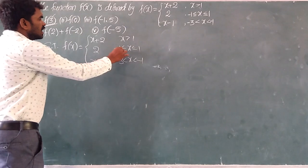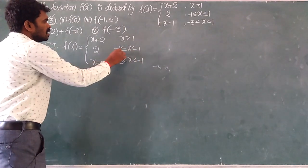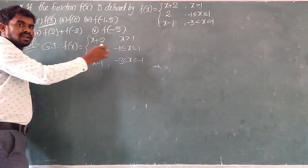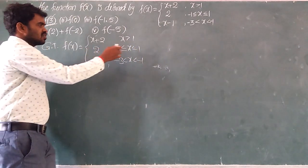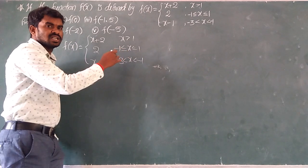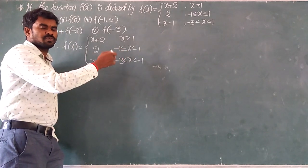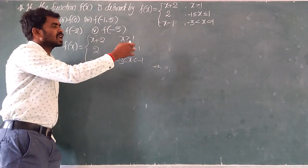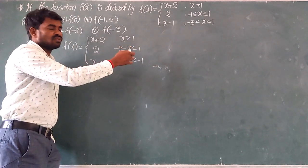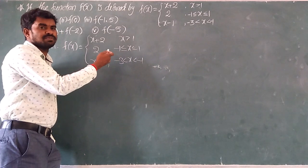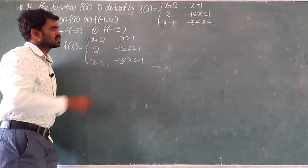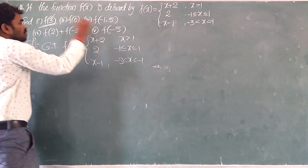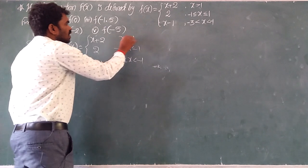Between minus 1 and plus 1 means 0, 0.1, 0.2, 0.9 — those kind of terms. So 3 falls in x greater than 1.